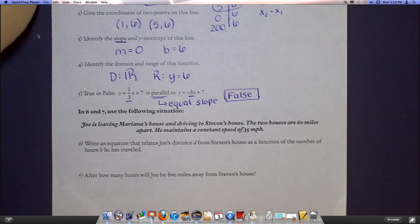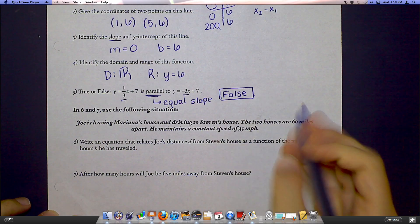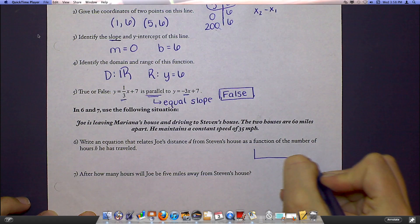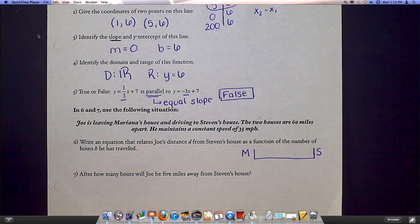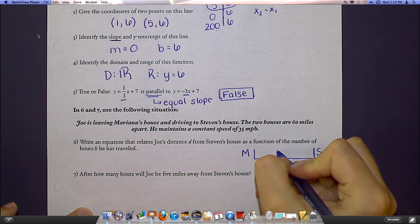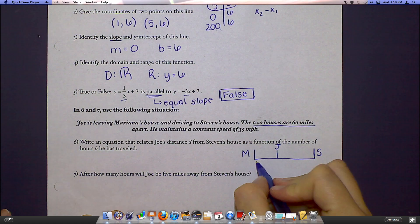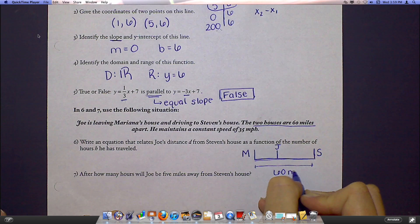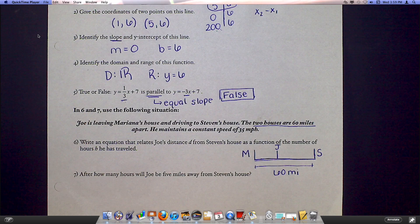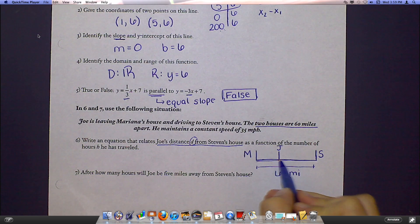Down to number six. Number six is a tough problem. But I think once you see it, it will make sense. So we have Joe leaving Mariana's house and driving to Stephen's house. So I'm going to set myself up a picture here. So here is Mariana's house down here. Here is Stephen's house down here. And Joe is driving from one to the other. So right now, Joe is somewhere in between. I know that the two houses are 60 miles apart. So I know this entire distance from here to here has to be 60 miles.